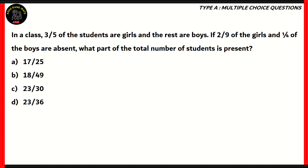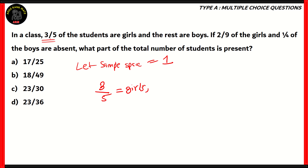Next question: in a class, 3/5 of the students are girls and the rest are boys. If 2/9 of the girls and 1/4 of the boys are absent, what part of the total number of students is present? Options: 17/25, 18/49, 23/30, or 23/36. Let's consider the total number of students as 1 for simplicity. So girls equal 3/5, and since the rest are boys, boys equal 2/5.